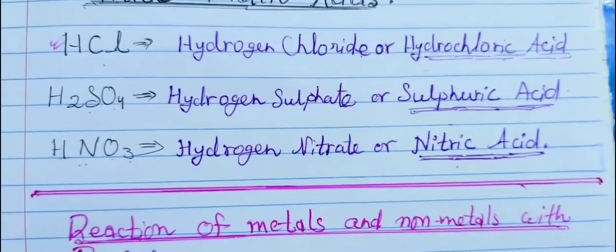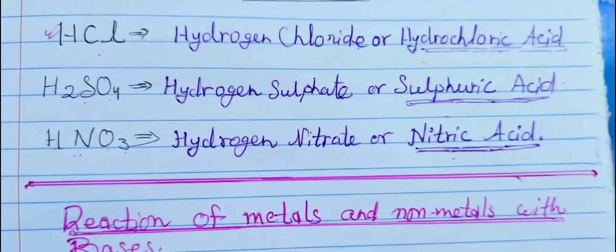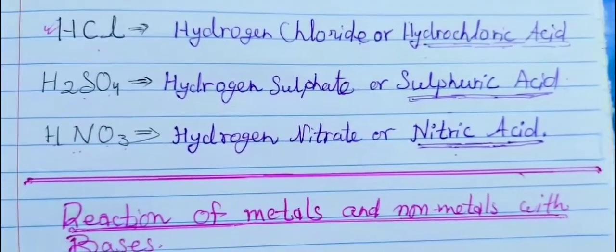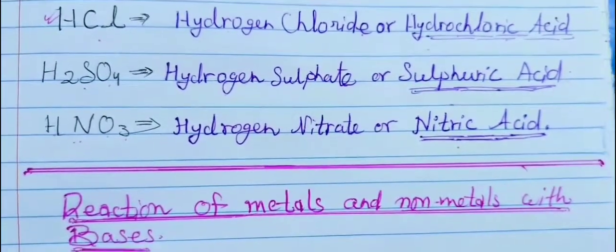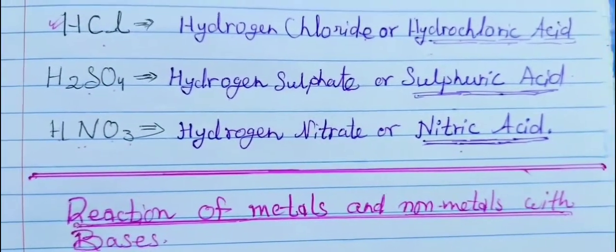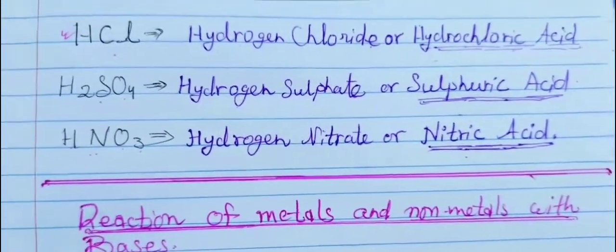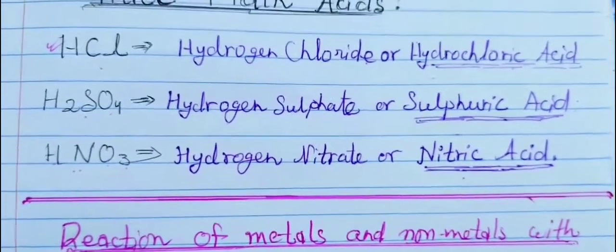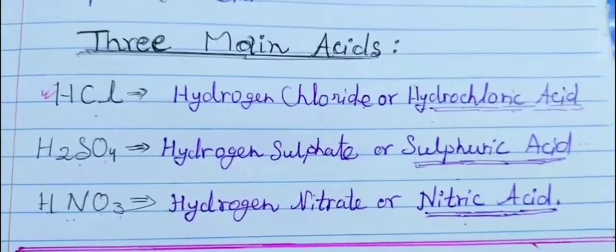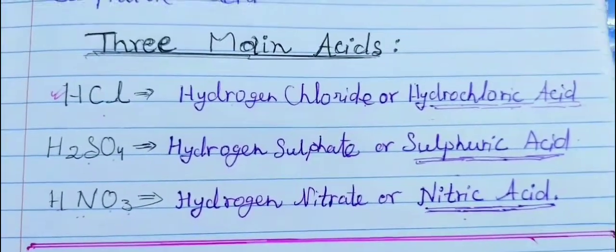The second one is H2SO4, also known as hydrogen sulfate or sulfuric acid. And then HNO3, also known as hydrogen nitrate or nitric acid. These are the three main acids we should know.